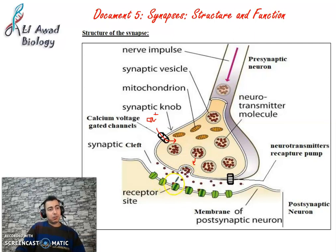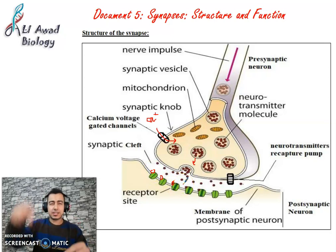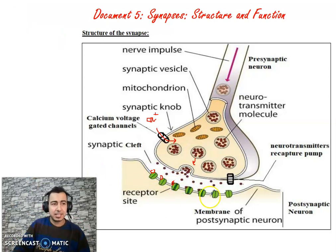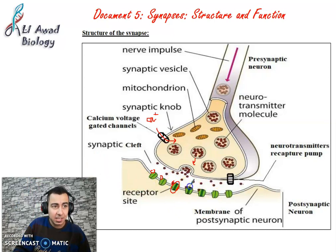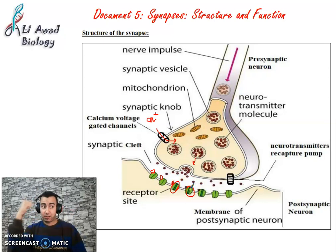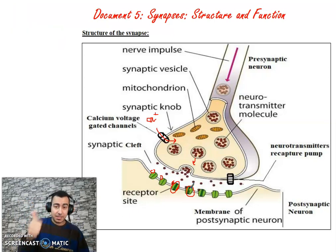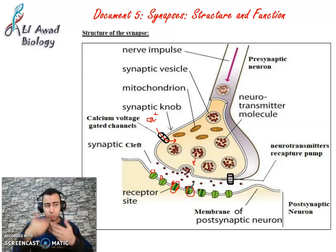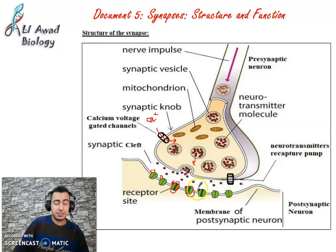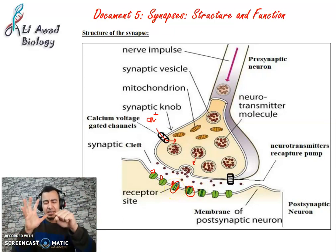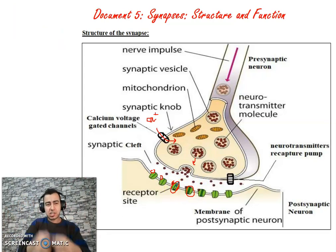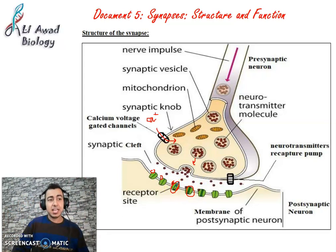The neurotransmitter now binds quickly to its receptors. Here we have channels called chemical-dependent channels, which are different from voltage-dependent channels. Voltage-dependent channels open due to voltage, while chemical-dependent channels open due to a chemical reaction. When neurotransmitters bind to these channels, changes in the chemical-dependent channels occur.